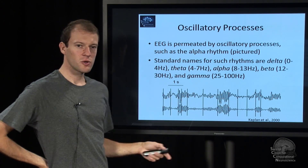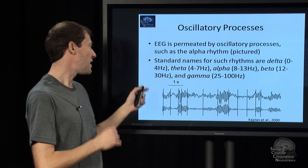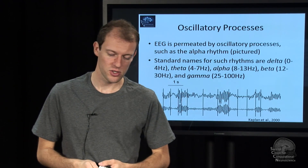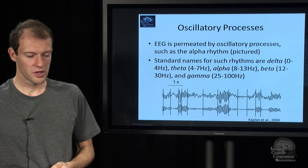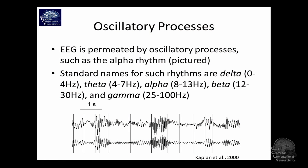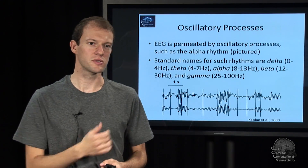Depending on the frequency, we call them differently. Delta is low frequency: 0 to 4 Hz. Theta oscillations are 4 to 7 Hz. Alpha oscillations are 8 to 13 Hz. Beta oscillations are 12 to 30 Hz. And gamma oscillations are 25 to 100 Hz — there is also low gamma and high gamma, with the crossover around maybe 45 Hz.